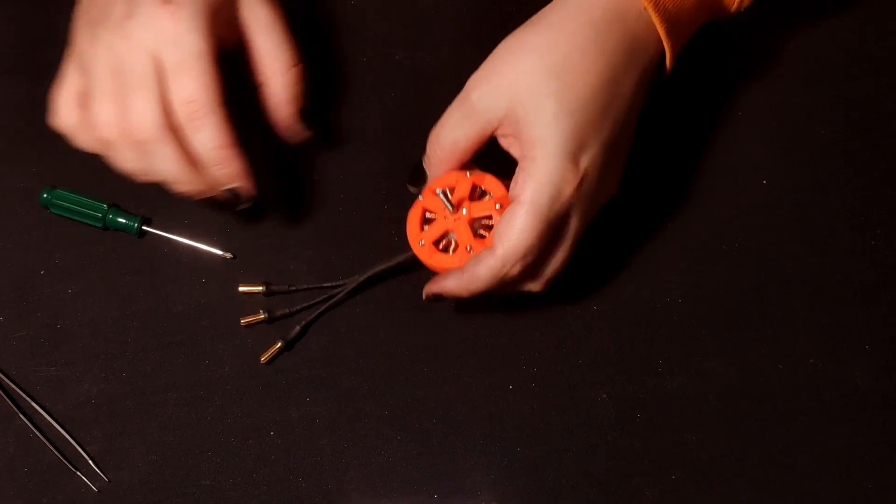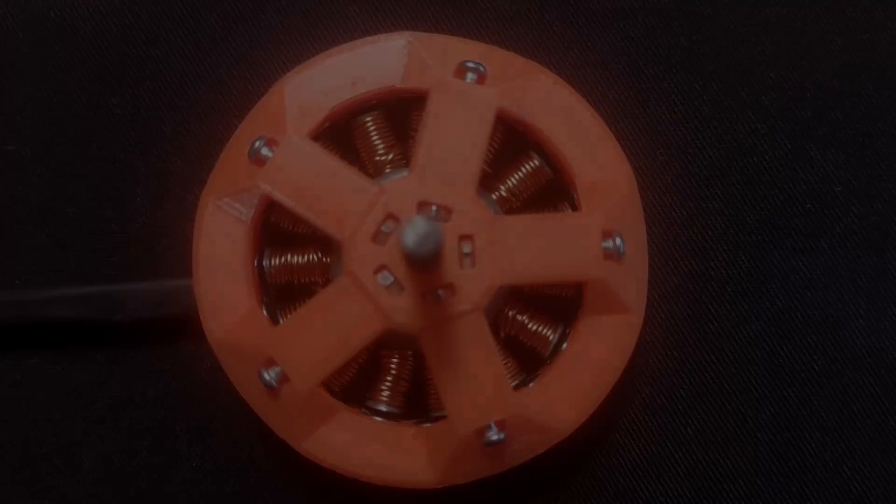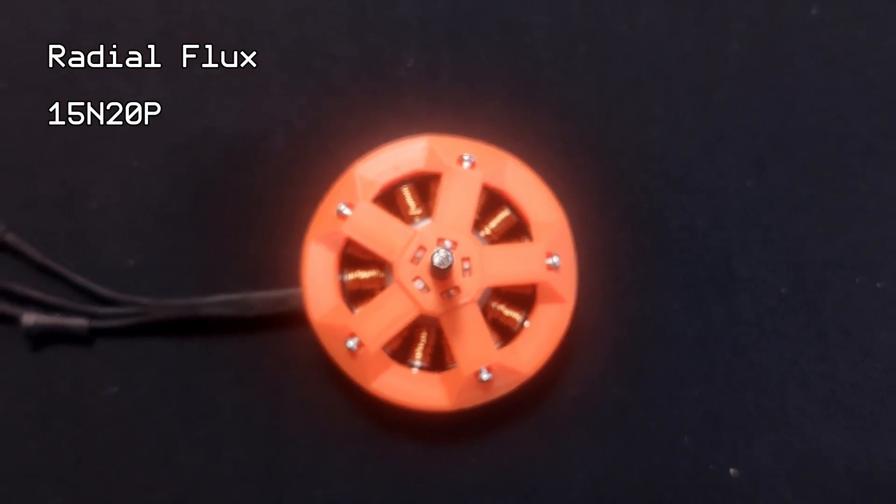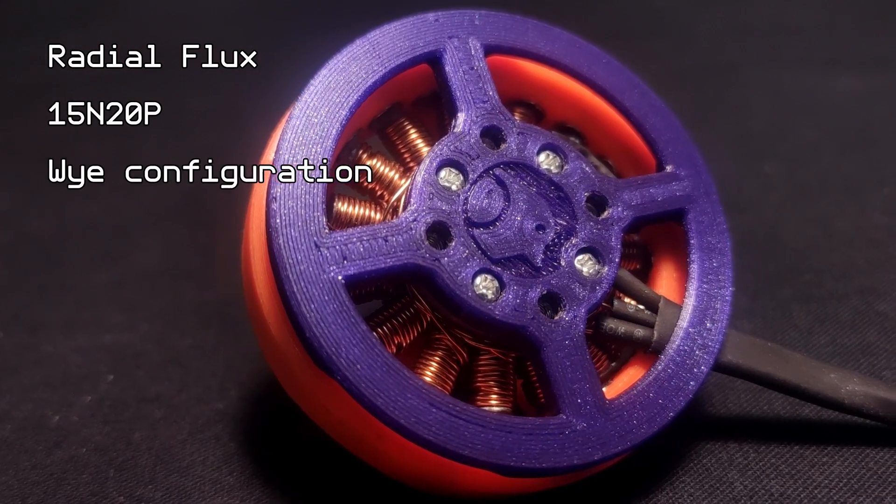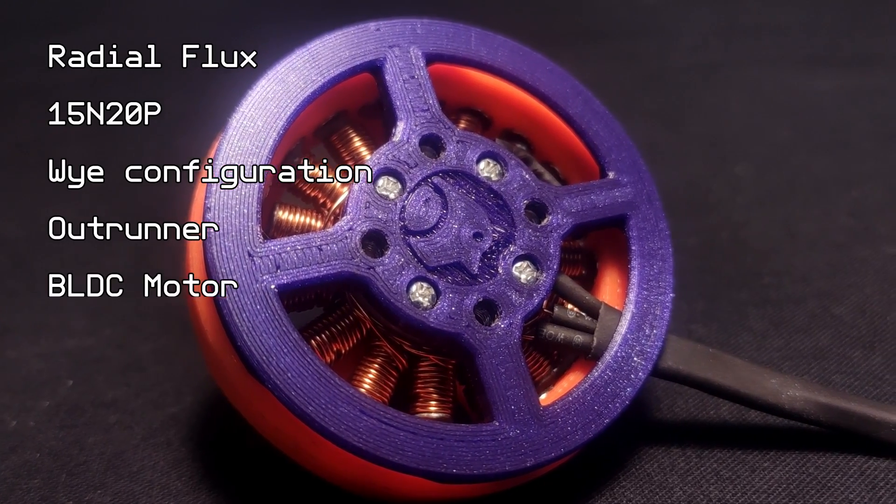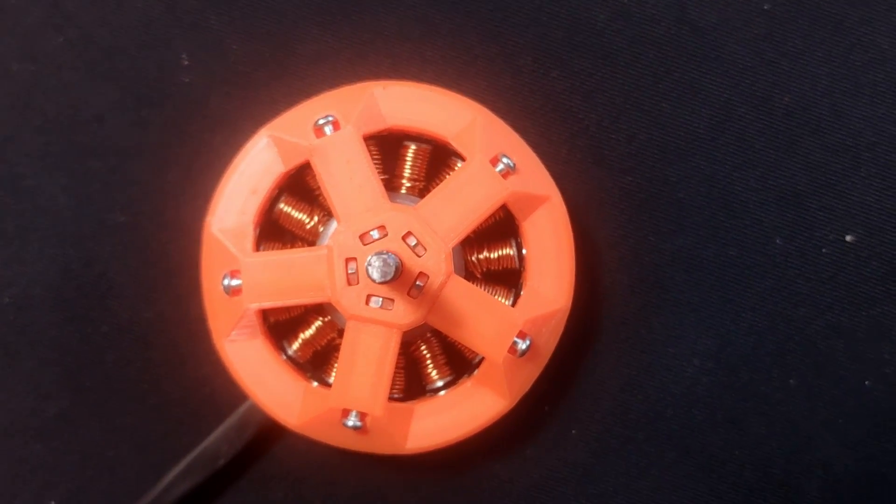And here we are. A radial flux, 15 slot, 20 pole, Y configuration, outrunner, brushless direct current motor. It looks great. Does it work though?